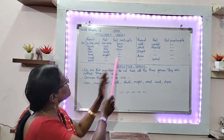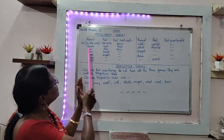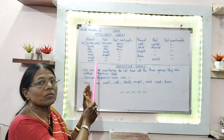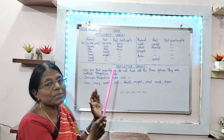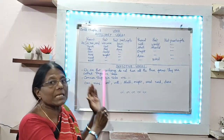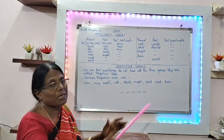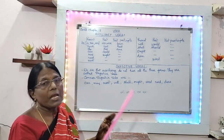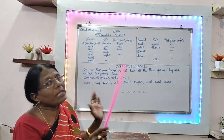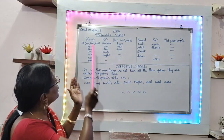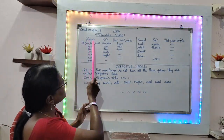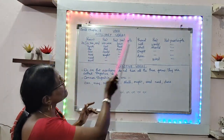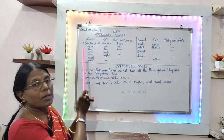These are all auxiliary verbs. Some auxiliary verbs have present, past, and past participle forms, and some are not. Here I have given present tense, past tense, and past participle.